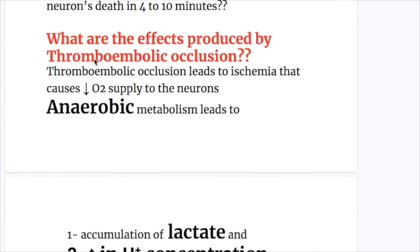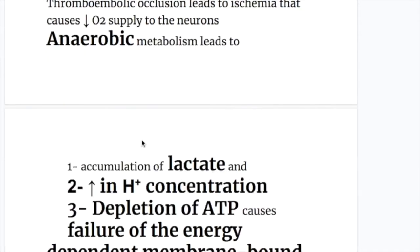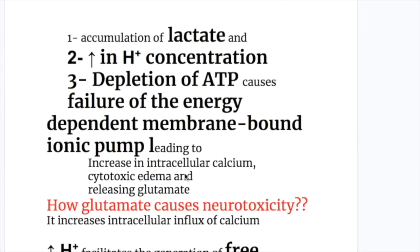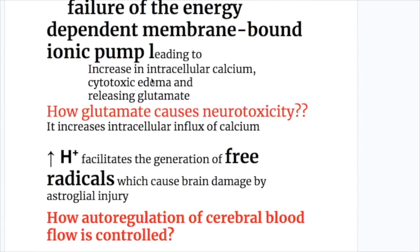What are the effects produced by thromboembolic occlusion? Thromboembolic occlusion leads to ischemia that causes decreased oxygen supply to the neurons. Anaerobic metabolism leads to: accumulation of lactate, increase in hydrogen ion concentration, and depletion of ATP causing failure of energy-dependent membrane-bound ionic pump, leading to increase in intracellular calcium, cytotoxic edema, and release of glutamate.